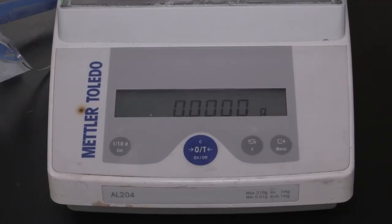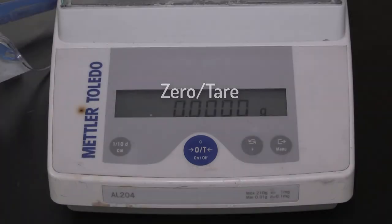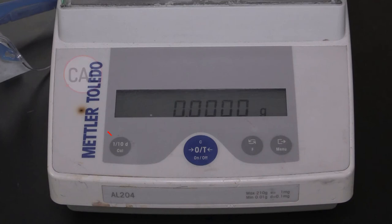Let's take a few moments to identify some of the buttons on the balance. First, there is the zero tear button. This is the one that you're going to use the most often. Don't ever touch the calibration button and also make sure that the correct units are being measured. The units should be grams.